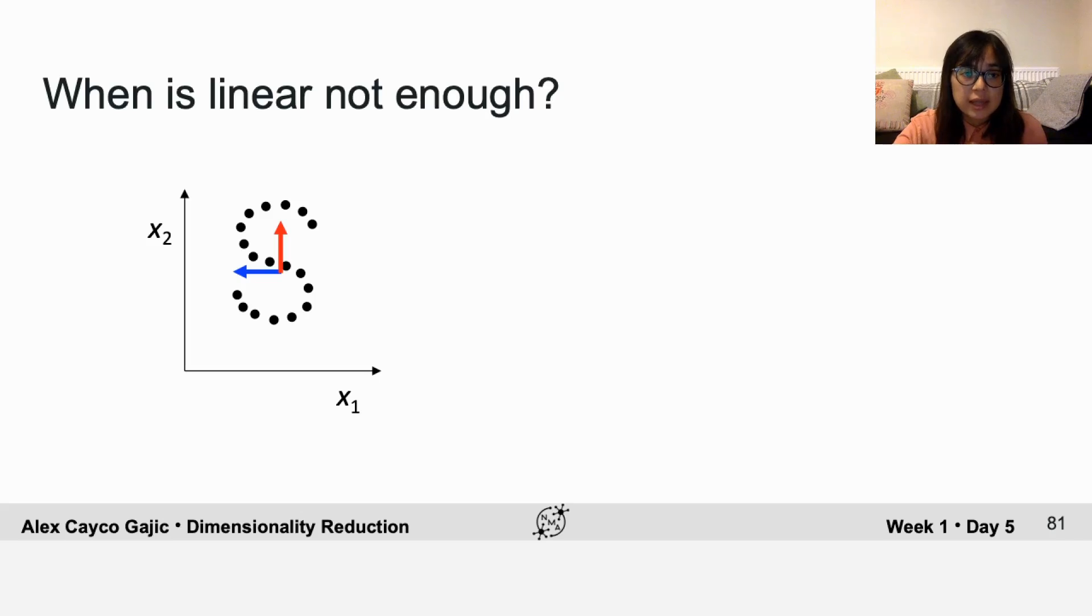Instead, what you want to find is this S-shape in which the data points are embedded. In neuroscience, we often call this a neural manifold. A neural manifold is a smooth, low-dimensional structure in which your data points are embedded in your high-dimensional space.